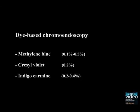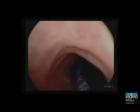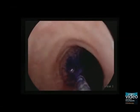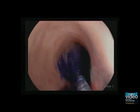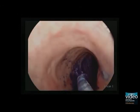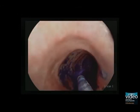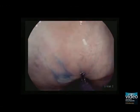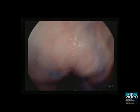Dye-based chromoendoscopy uses biocompatible dye agents to enhance mucosal detail and submucosal vascular patterns. Typical contrast agents include methylene blue, cresyl violet, and indigo carmine in a concentration of about 0.2%. This video demonstrates the application of methylene blue via a standard spraying catheter in a patient with long-standing ulcerative colitis.